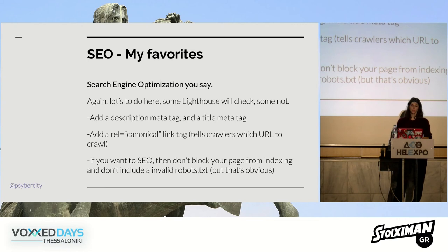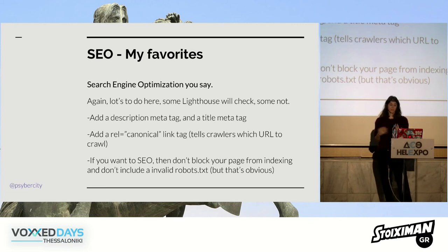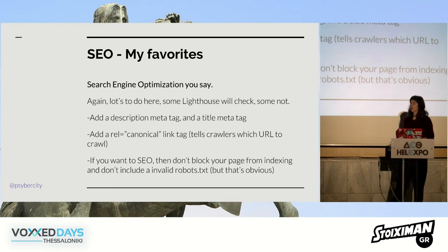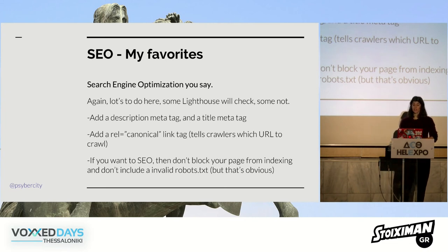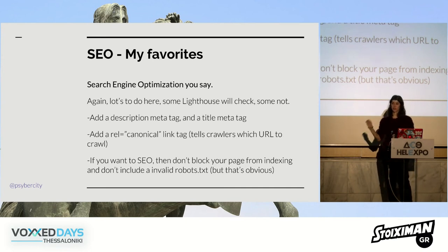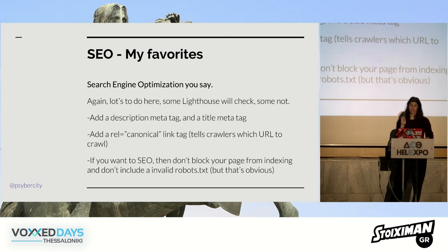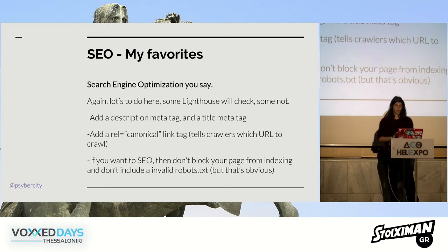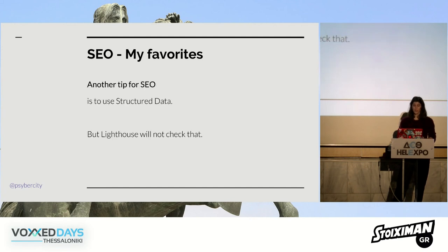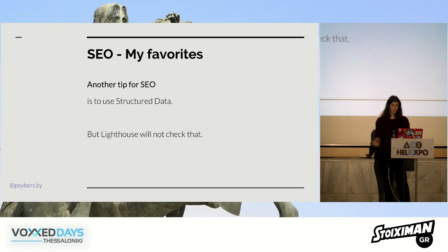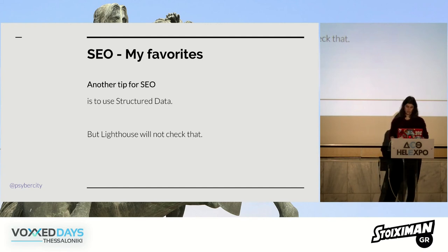For search engine optimization, you have to add a description meta tag and a title meta tag to help search engines and web crawlers. You can add a canonical link tag — if there are multiple versions of your page like mobile, desktop, or a lighter version, the canonical link tells web crawlers which version to actually crawl. Common sense: don't block your page from indexing, and don't include an invalid robots.txt. Another SEO tip Lighthouse won't check is structured data — you can check that yourself.